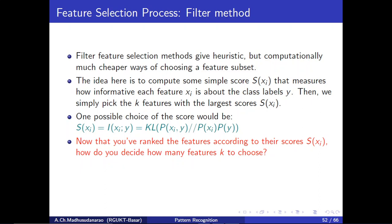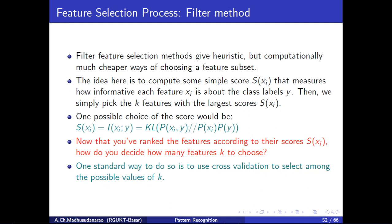Now try to rank those features according to the scores in the decreasing order of scores. High score means that feature is good for the classification task. One way to select how many features — what the value of K should be — is to take the help of cross-validation. We will try to train a classifier and after that test on the validation set.